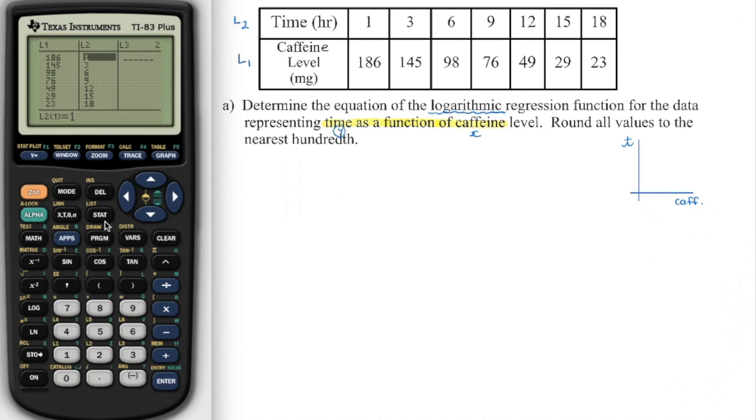And then to get that curve of best fit, we're going to go back into stat, over to calculate, and then we can go down here or you can arrow up, but I just want you to see it's nine, we are not using eight. So don't go to number eight. It's nine. It's that natural log regression that we want. So we're going to choose that one.